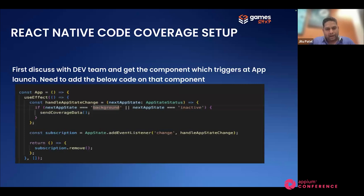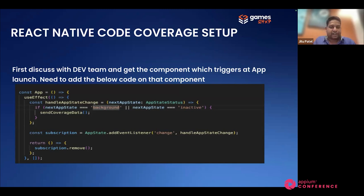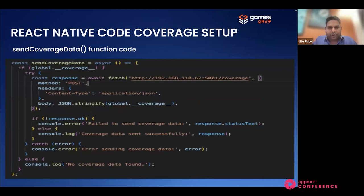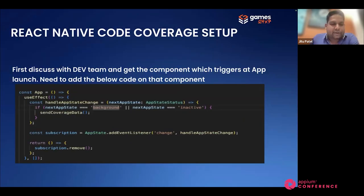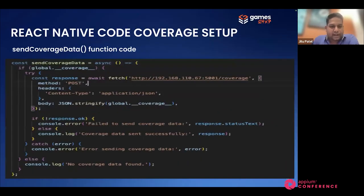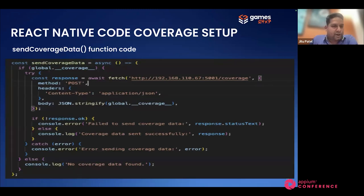This code should be added by the dev team in their application so that when the app is in background, inactive, or killed state, it will send the code coverage data to our server. The dev team needs to identify where the app launch component is — in app.tsx — and add this particular snapshot of code there. You can see there is a coverage data function. Here there's a hard-coded IP, but you can pass it from the Android activity at runtime — you don't have to hard-code it, you can just change the IP and send it to the coverage server.